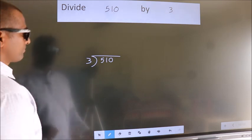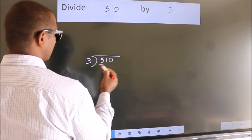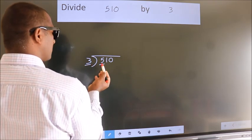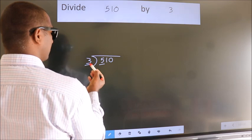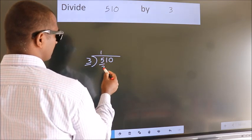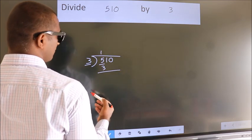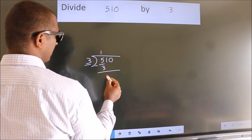Next. Here we have 5. Here 3. A number close to 5 in 3 table is 3 ones 3. Now we should subtract. We get 2.